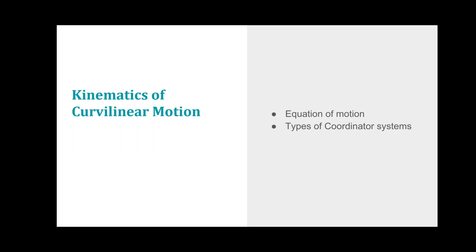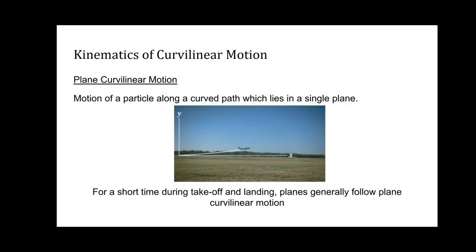Contents of this video: kinematics of curvilinear motion. We will discuss its equations of motion and different types of coordinate systems. The motion of a particle is said to be curvilinear when it moves along a curved path. Curvilinear motion can either be in two dimensions or three dimensions. An example is the aeroplane taking off from the airport — for a short time during takeoff and landing, planes generally follow plane curvilinear motion, that is, motion along a curved path in a single plane.